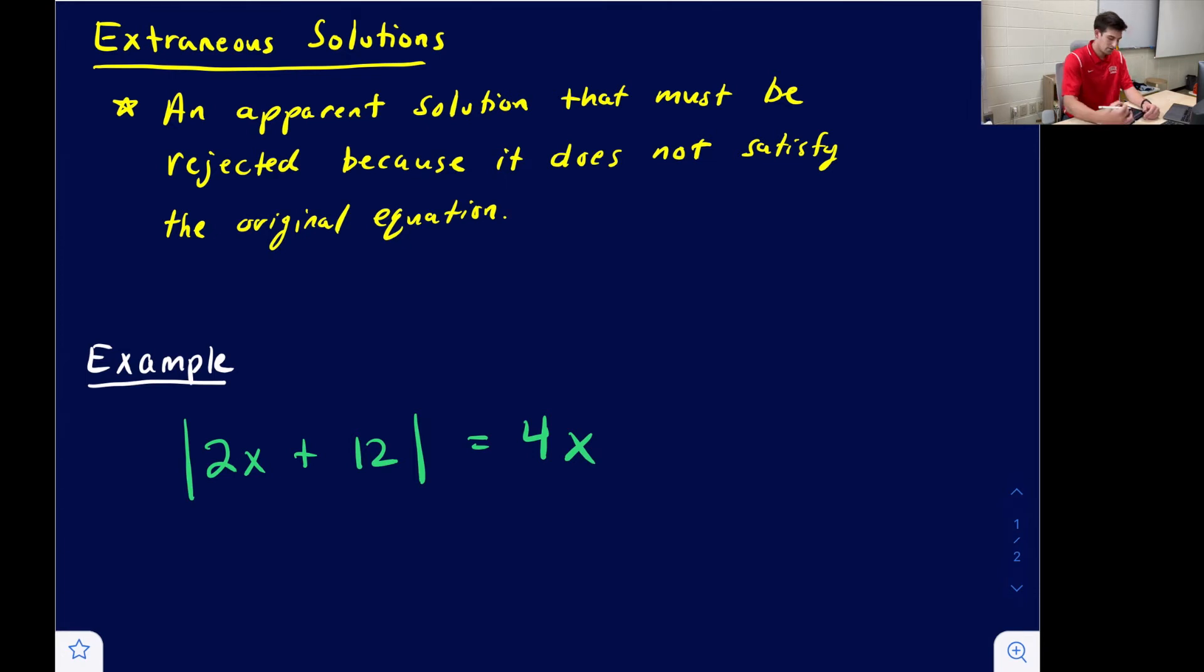An extraneous solution is an apparent solution that must be rejected because it does not satisfy the original equation. That's key here. When we solve an absolute value equation, we want to make sure we plug our solutions back into the original absolute value equation to check and see if it gives a true statement.